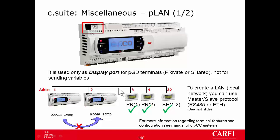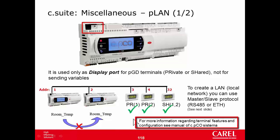From the point of view of the device, device 1 uses two of the three possible terminals: one as private and one as shared. Similarly, device 2 uses terminal 4 as private and terminal 32 as shared. You can find more information regarding terminal configuration and use in the user manual of Cpico Sistema.